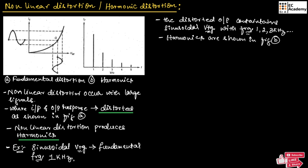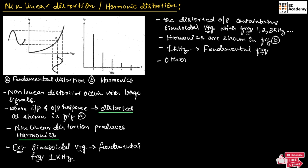As shown in figure B, 1 kHz is the fundamental frequency and 2 kHz, 3 kHz, 4 kHz and so on are the frequencies due to distortion. Hence, 1 kHz is known as the fundamental frequency and the other frequencies are known as harmonics.